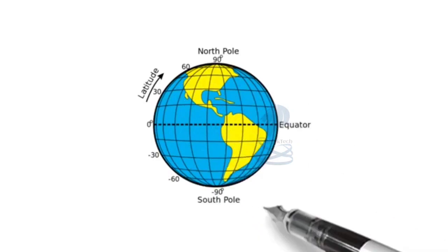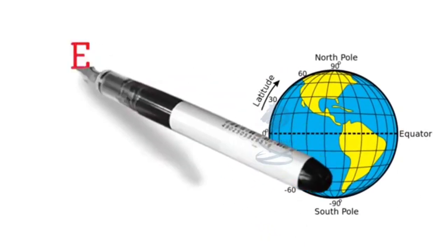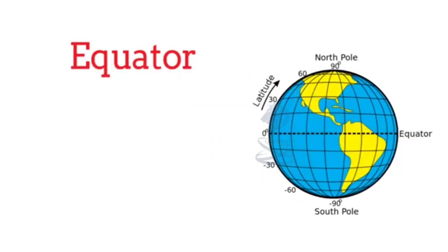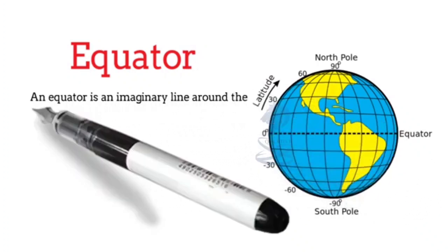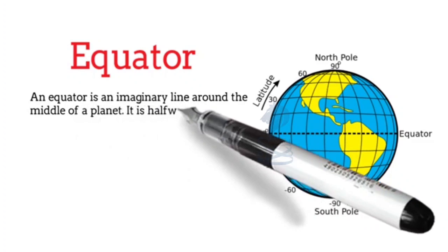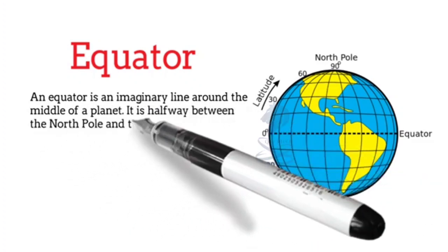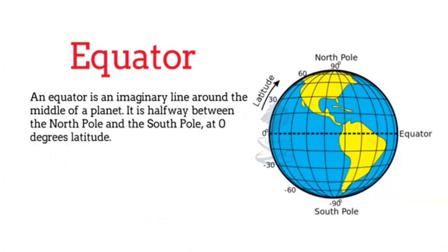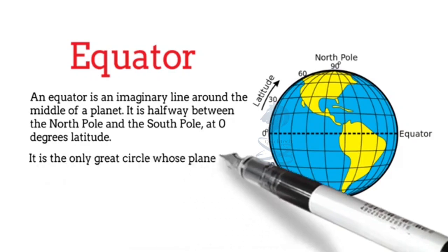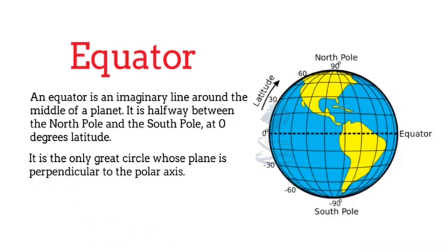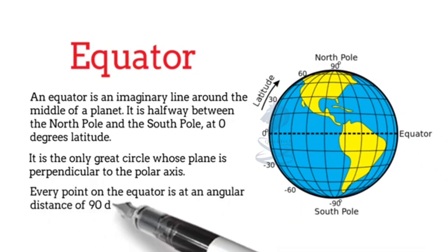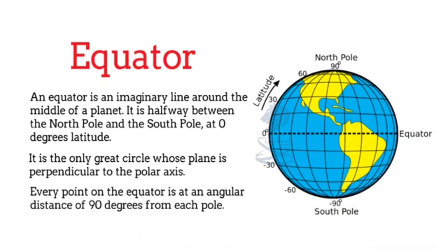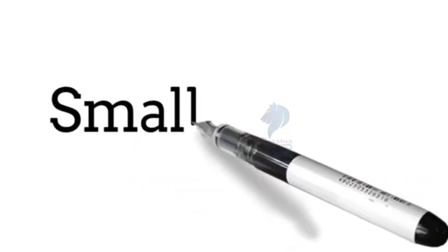The next example of a great circle is the equator. The equator is an imaginary line around the middle of a planet, halfway between the North Pole and the South Pole at 0 degrees latitude. It is the only great circle whose plane is perpendicular to the polar axis. Every point on the equator is at an angular distance of 90 degrees from each pole.